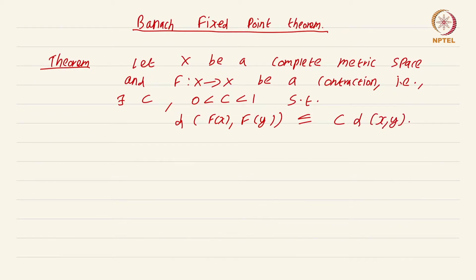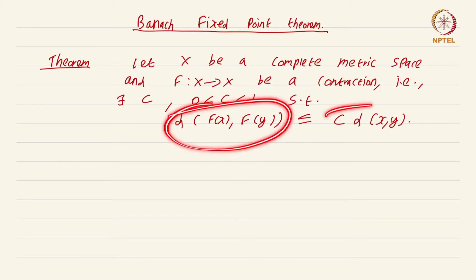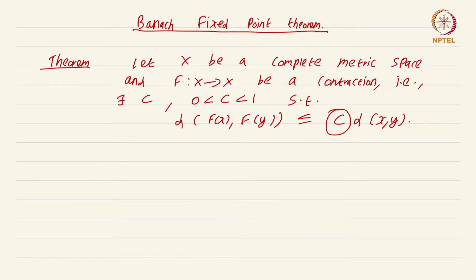In some sense the map sort of contracts points x and y to points that are closer to each other, and that is captured by saying that d(f(x), f(y)) ≤ c·d(x, y). This constant c is independent of the choice of points — that is to be remembered. This constant c does not depend on the choice of points.